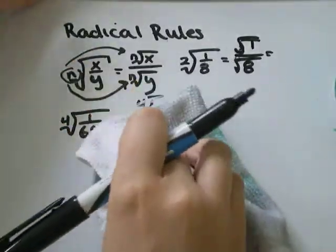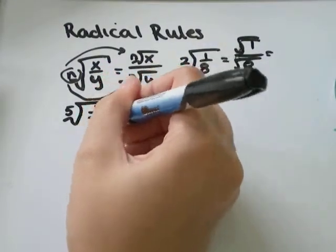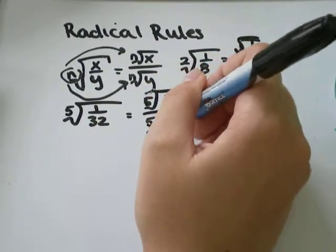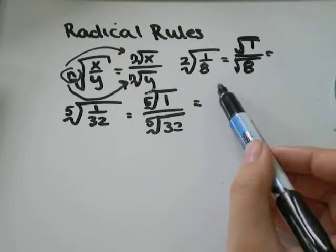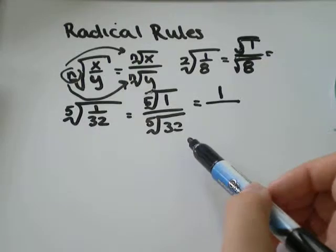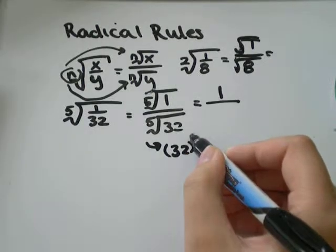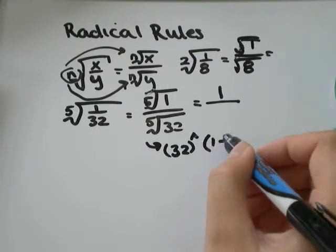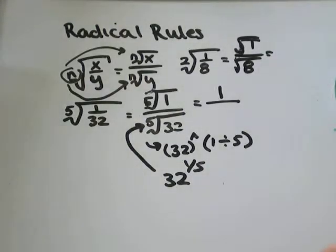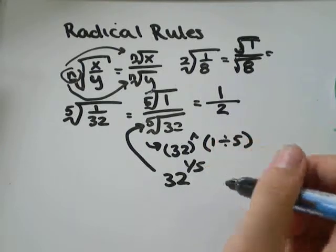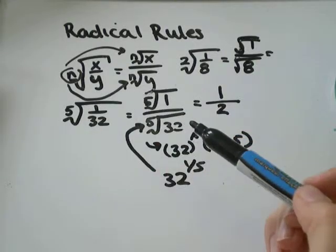Let's do one more example — the 5th root of 1 over 32. That's equivalent to the 5th root of 1 over the 5th root of 32. The 5th root of 1 is 1, since 1×1×1×1×1 = 1. For the 5th root of 32, I would type 32 to the exponent of, in brackets, 1 divided by 5 on my calculator, because 32 to the exponent 1/5 is equivalent to the 5th root of 32. You should get 2, because 2 multiplied by itself 5 times equals 32. So the 5th root of 1 over 32 is just one half.